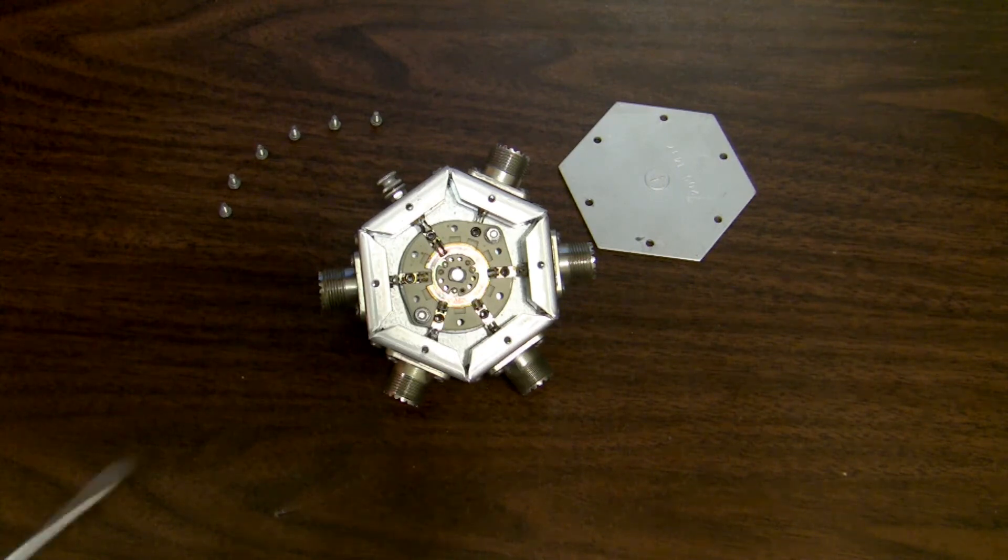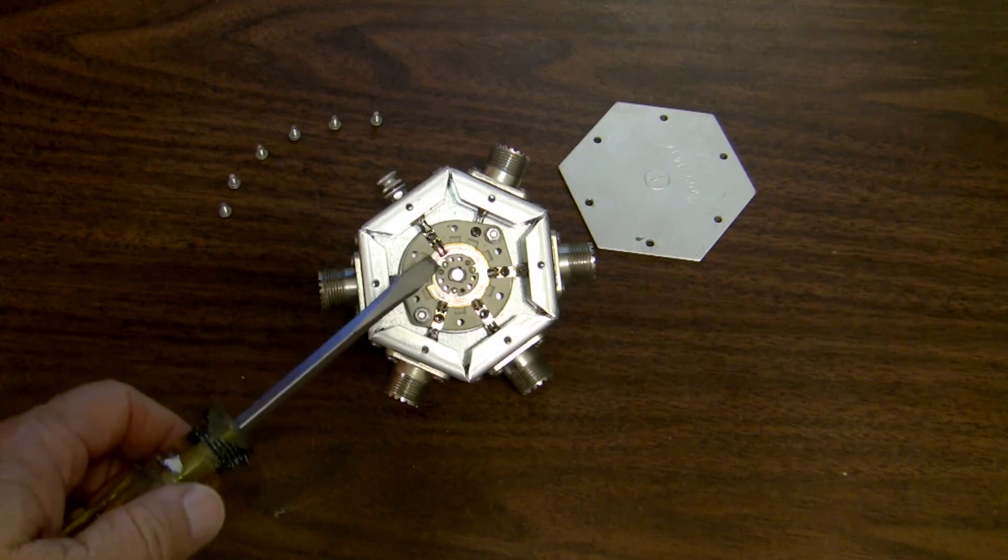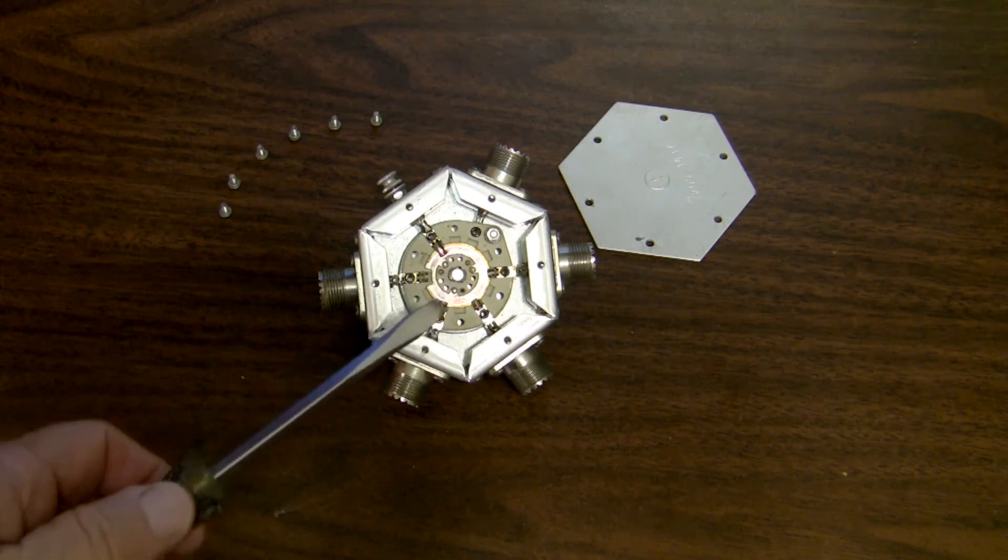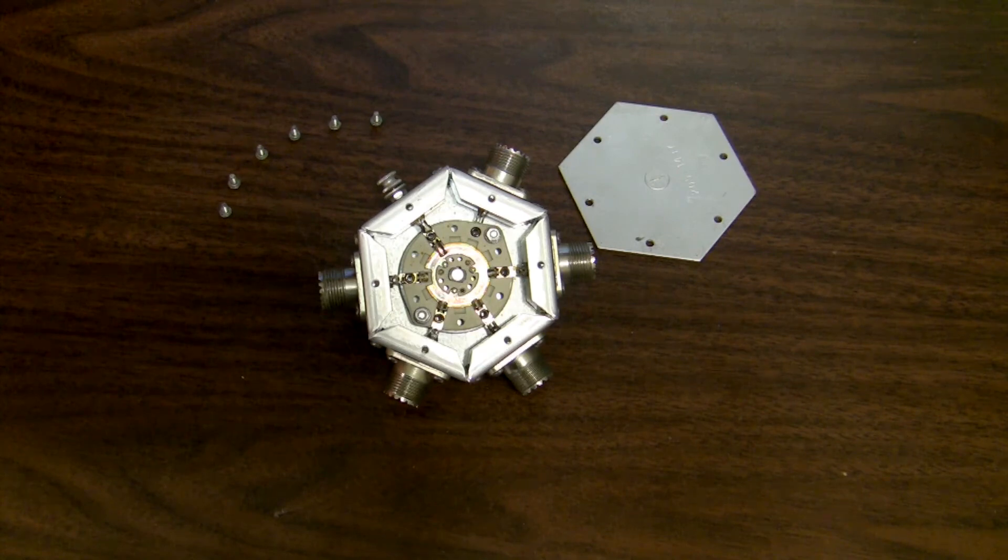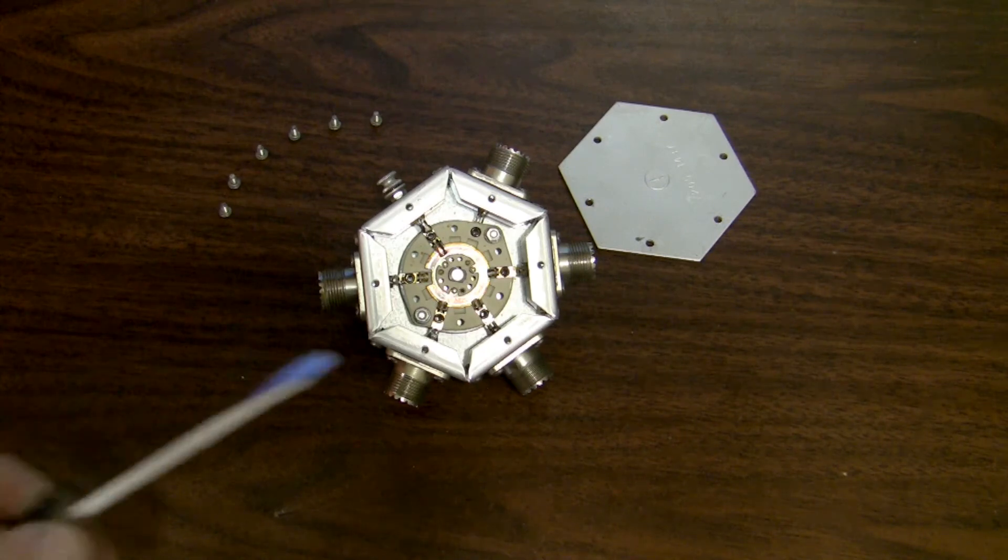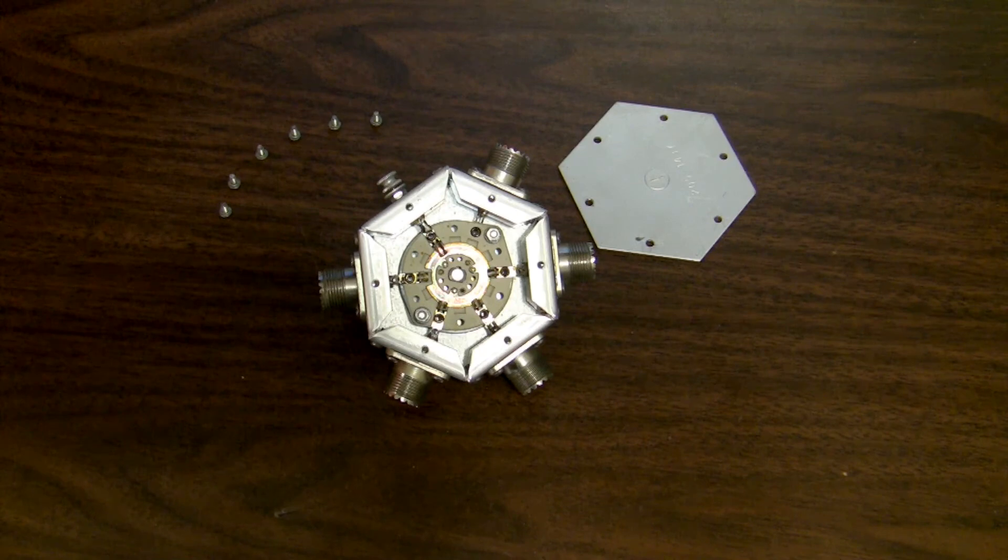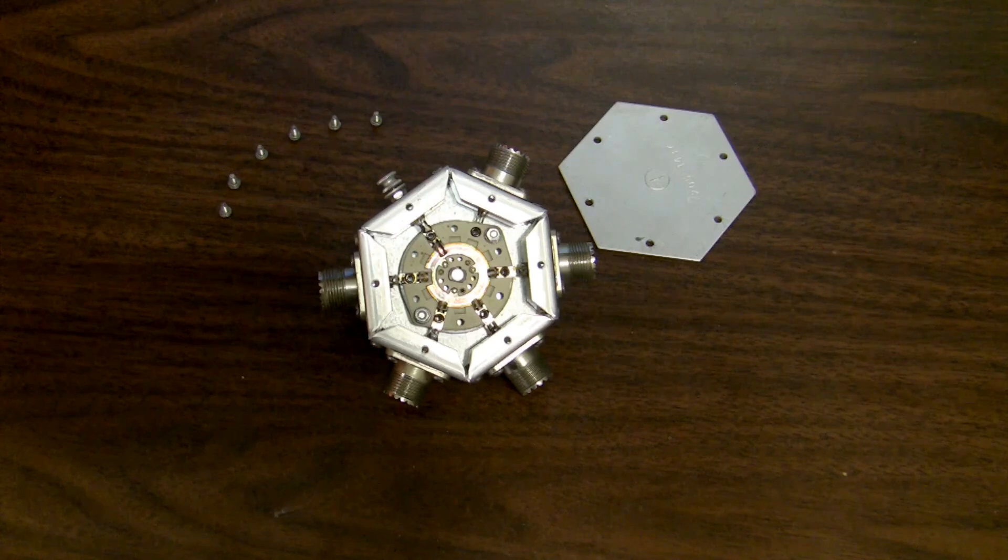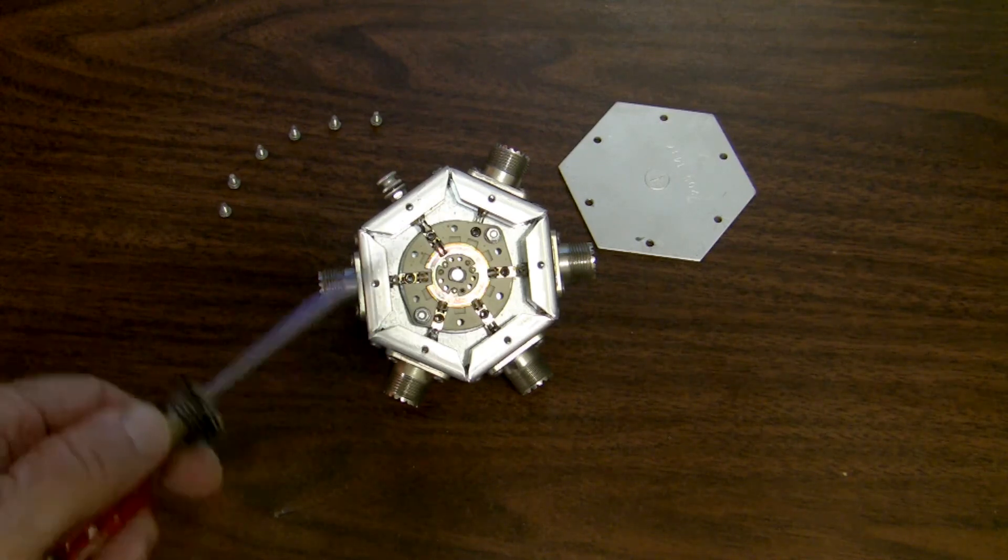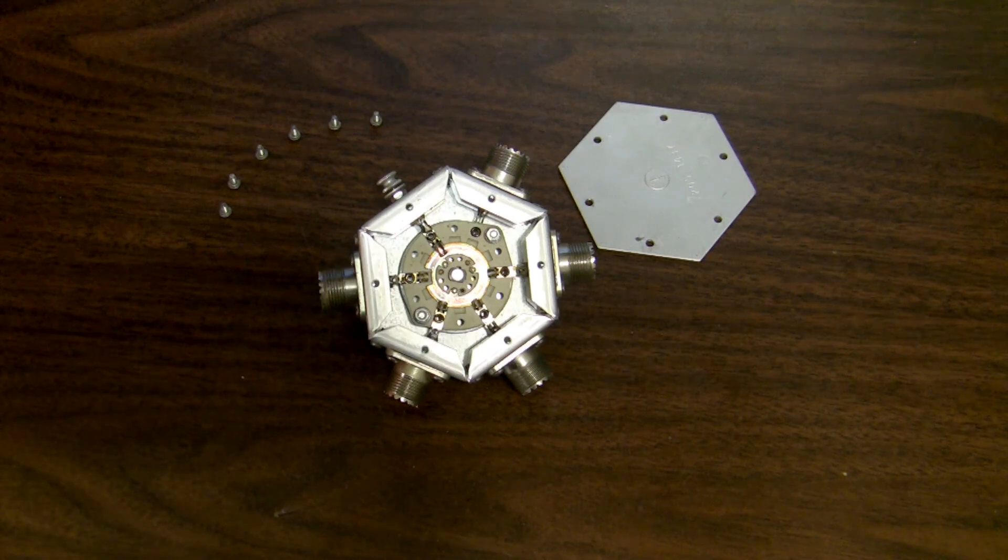You can also of course use the return loss bridge or the ZFDC directional coupler to determine what the standing wave is at the various bands with this thing, just to see how it performs that way. I'm not going to do that in this case, but we know it has a pretty good match and pretty good isolation in HF, which is what it was designed for, and it probably has reasonable performance at 50 megahertz as well. So if I use this at all, I'll be using it on those bands.